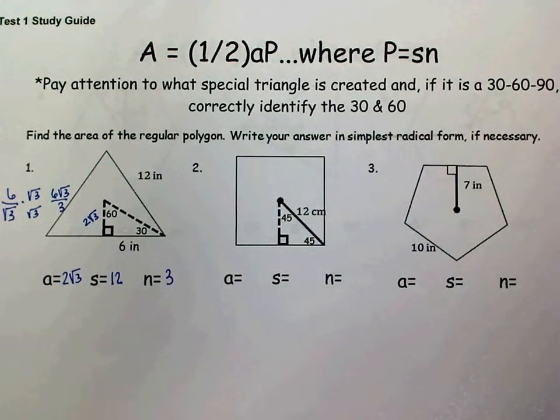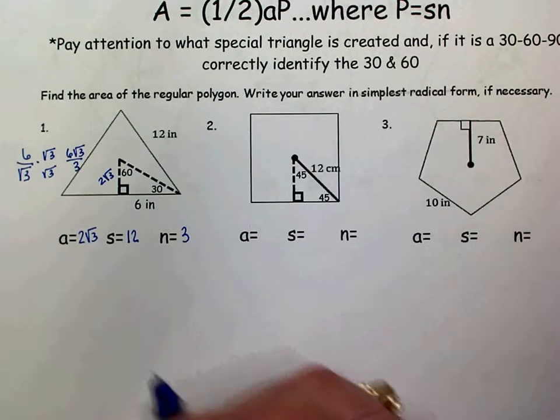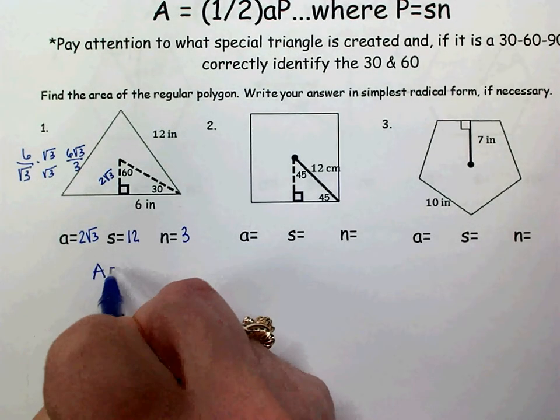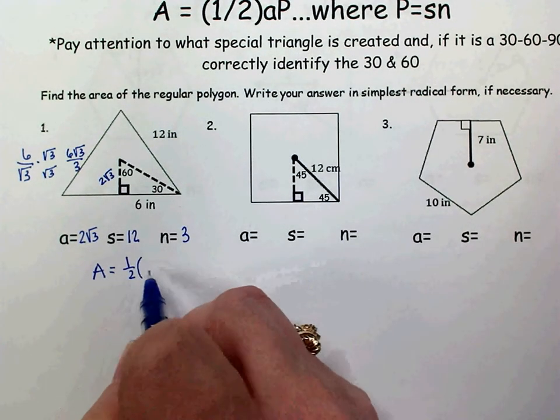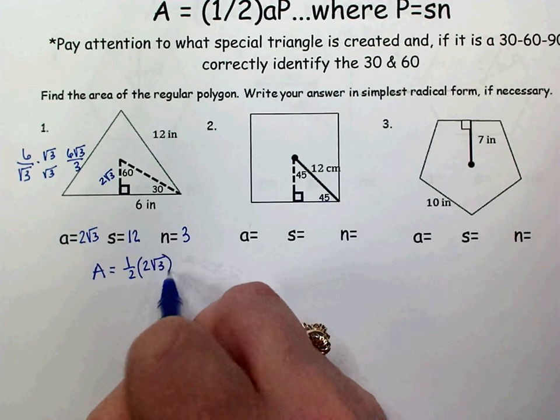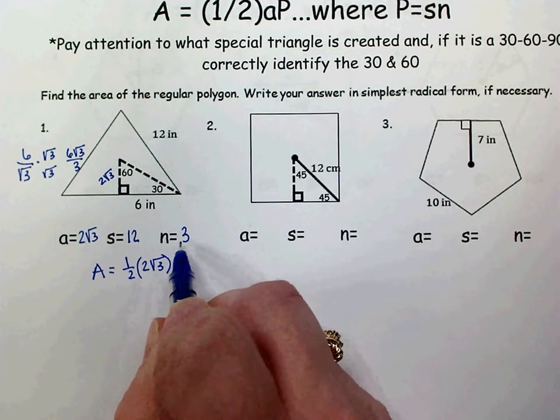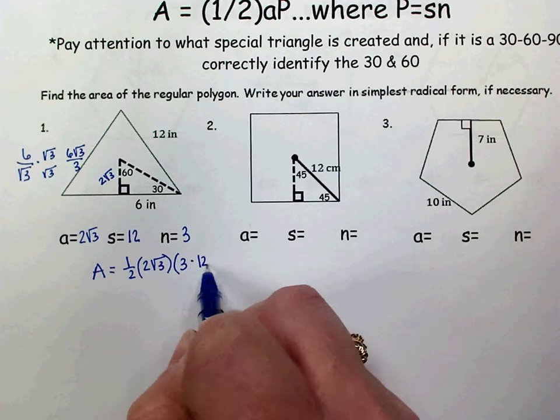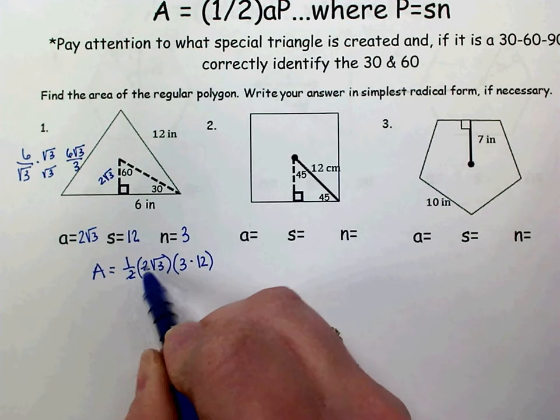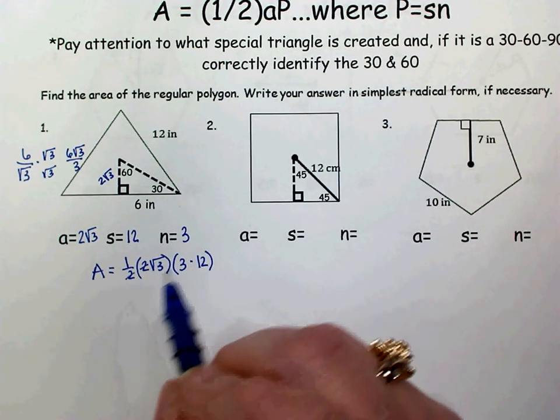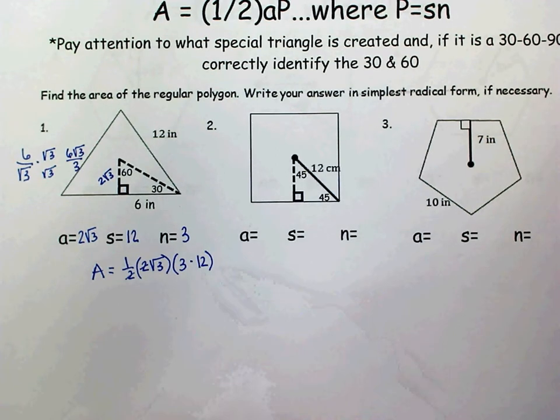So now I can find the area of that triangle by using my formula 1/2 times the apothem, 2√3, times the perimeter, which is the number of sides times the side length. So we know the 1/2 times the 2 is just 1 and they cancel. 3 times 12 is 36.